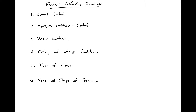There are several different factors that are going to affect our shrinkage, and you can see them here. The first is the cement content. As cement causes hydration, if we have an increased amount of cement, we're going to also have an increased amount of hydration. So there's more water that's going to want to go towards hydration, and this is going to increase our autogenous shrinkage.